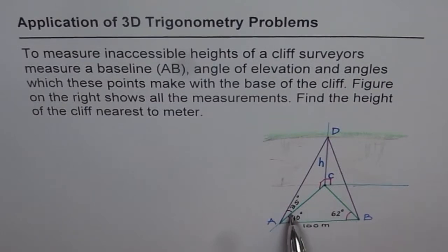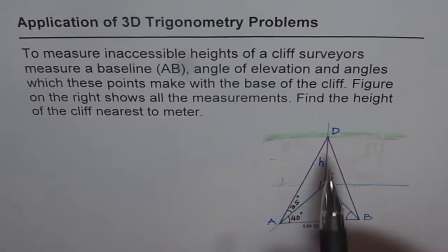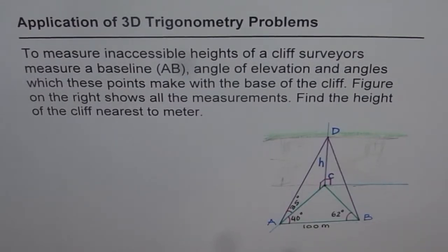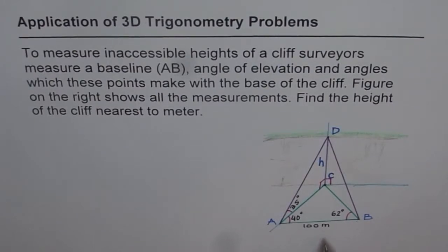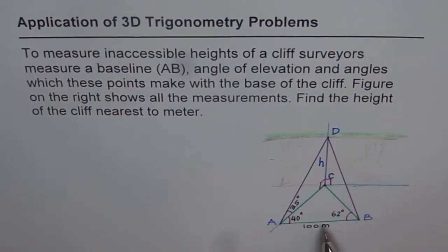And then the last measurement is done of an angle of elevation from one of the points to the cliff top, right? So that is 35 degrees. Knowing this, we can always find the height of the cliff. How? That is the question for you. So solve this triangle and find height h of the cliff.